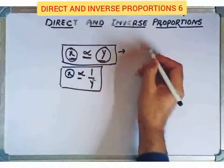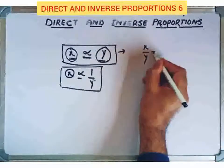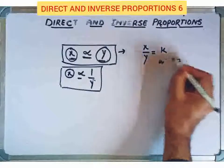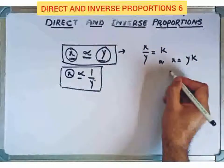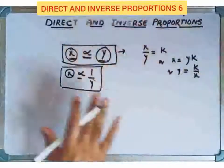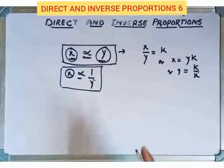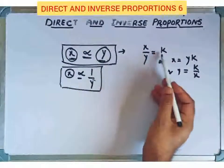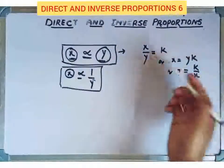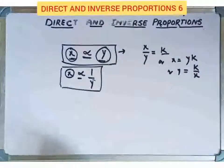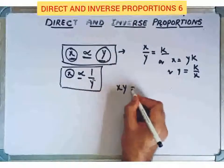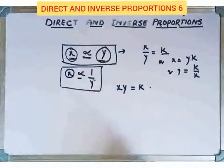In direct proportion, we conclude that x divided by y is always constant — that is, x equals k times y, or equivalently y equals k divided by x. So x divided by y is always constant. In inverse proportions, we conclude that x times y is equal to k — x into y equals k.